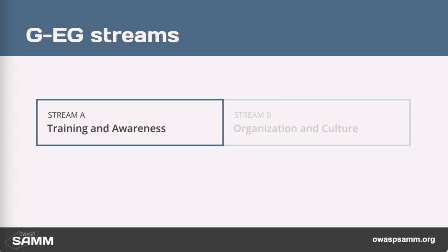In my opinion, training and awareness is one of the most important streams in the SAM model. If you have a zero score everywhere, I would start here. This should definitely be one of your highest priority points if you have no training and awareness program going on.